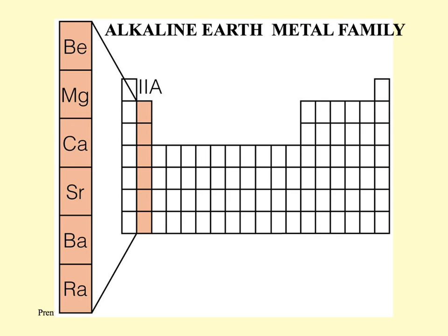The alkaline earth metal family belongs to 2A in the periodic table, and all of these are the elements that make up this family. They are also an active family, not as active as 1A, but they are. And the densities are a little bit higher than the other one.